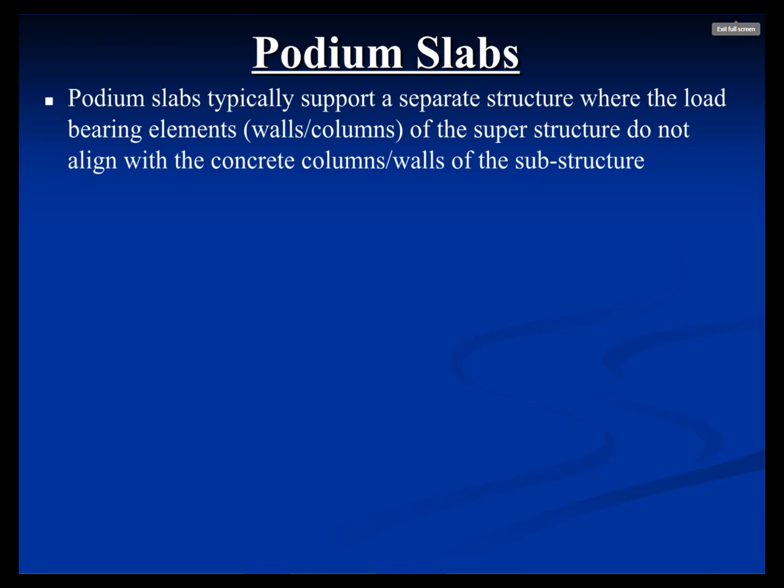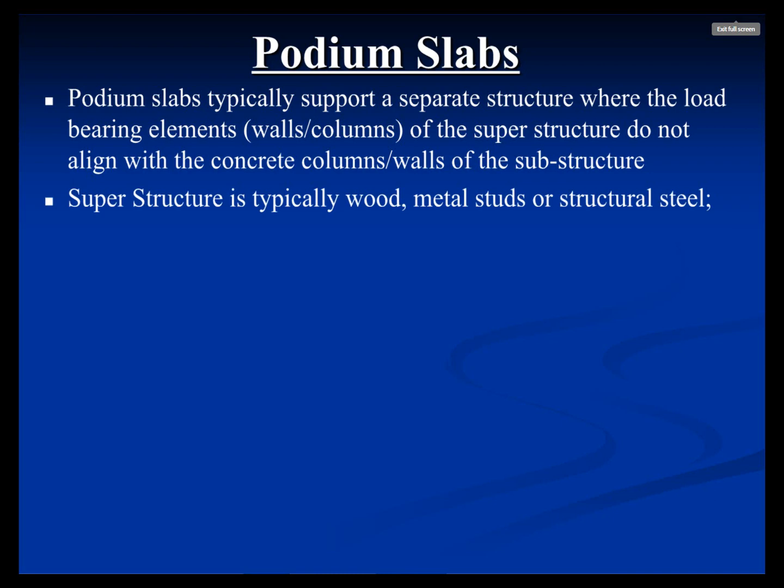In general, a Podium Slab is typically a separate structure. You have a concrete substructure that holds up typically a wood or metal stud framed apartment structure. You have parking below the Podium Slab and wood framing above. The major difference from, say, an office building or hotel is that in a Podium structure, the concrete columns support the slab but will rarely, if ever, align with the bearing walls or columns of the apartment structure above.